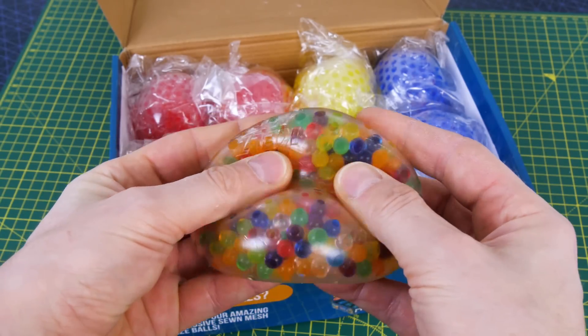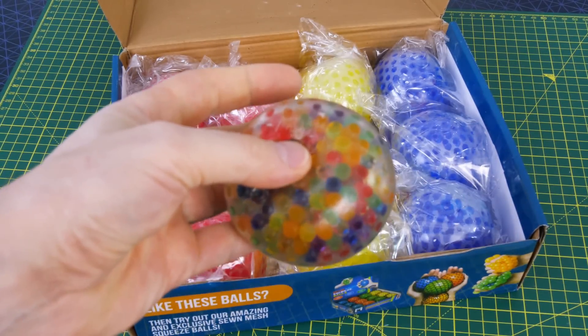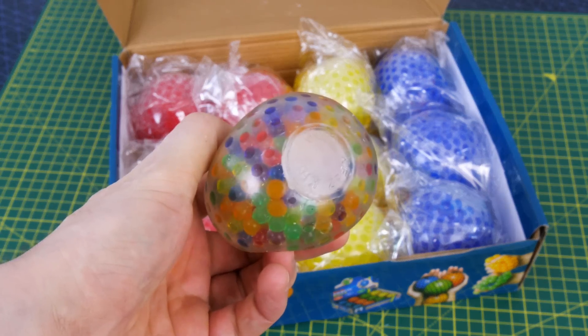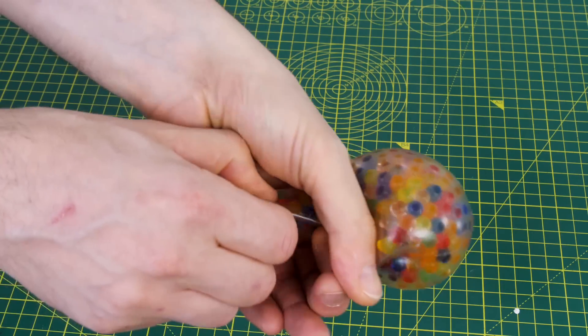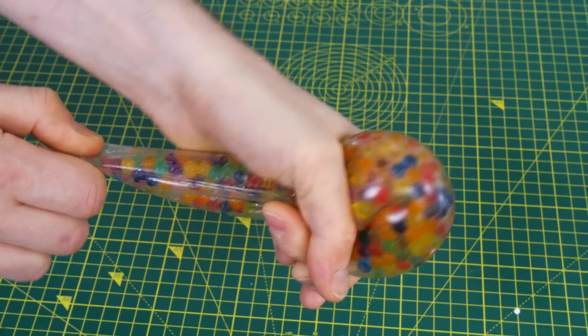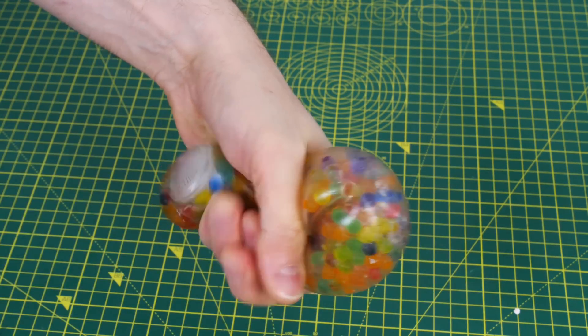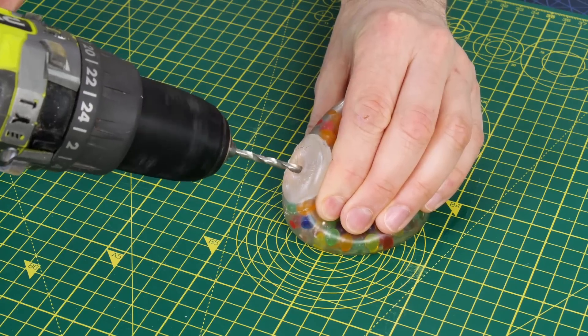The beads inside seem pretty soft so I'm not sure they're going to be any use as they are, but the rubber's really stretchy and seems pretty tough so the membrane should be ideal. I was hoping I could draw them out and reduce air pressure inside, but the rubber's so stretchy and the beads are so soft that's not going to work, so it's time to dissect one.